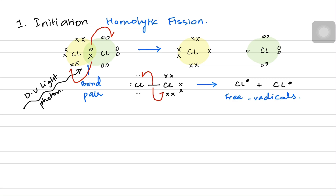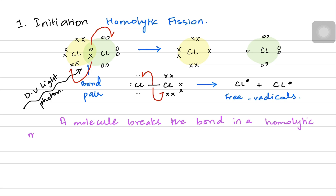The free radicals made in the initiation step go on to attack other molecules in the next step. The definition of the initiation step is: a molecule breaks its bond in a homolytic manner to produce two free radicals from a simple uncharged molecule.